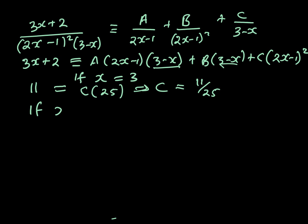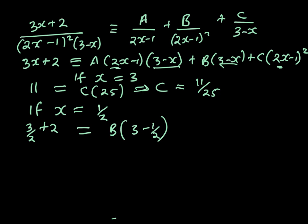If x equals one half, that makes the first and third brackets zero. So 3 over 2 plus 2 equals B times 3 minus one half, giving 7 over 2 equals 5B over 2, meaning B equals 7 over 5.